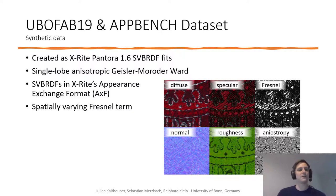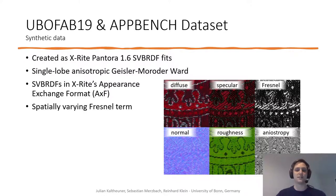Outside of these HDR real-world images, the dataset also contains SVBRDF data of every fabric, created with the help of X-Y's Pantora SVBRDF FITs. It uses a single-lobe, anisotropic Geisler-Muroder-WARD model, with the SVBRDF stored in the Appearance Exchange format, with the spatially varying Fresnel Term, Diffuse Albedo, Specular Albedo, Normal Maps, as well as two-dimensional roughness values and anisotropy angles.